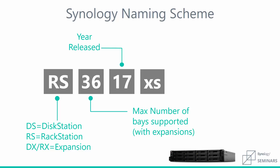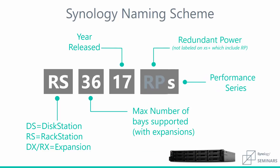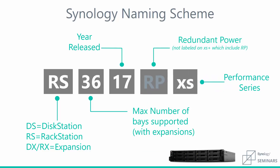To the right of the year, you'll have the performance indicator. This will range anywhere from a J to an XS+, and helps to note the overall performance level of the unit itself. We do want to highlight one thing: in some of our product names there will actually be an RP before the XS. This just states that this is a redundant power version of that existing XS unit.